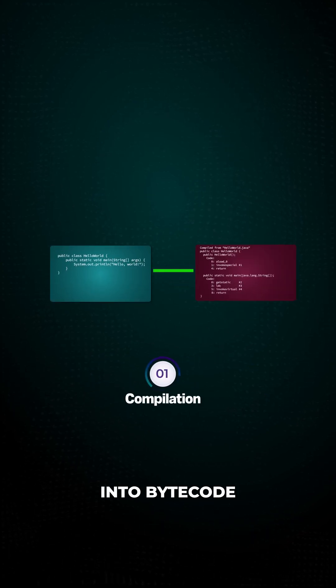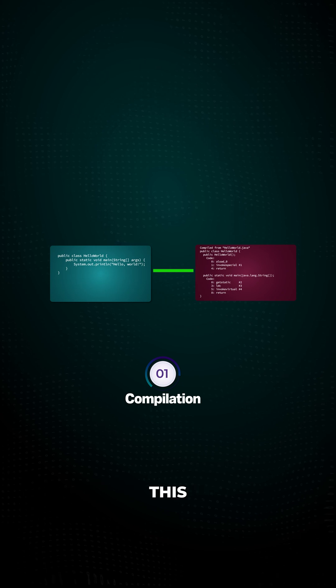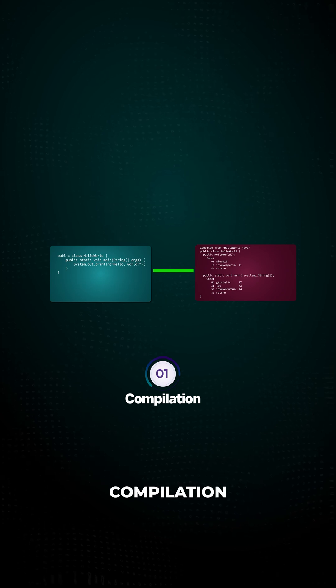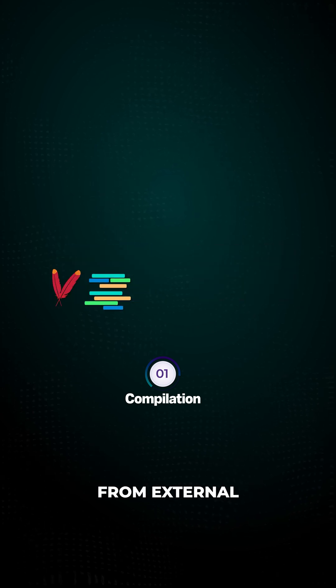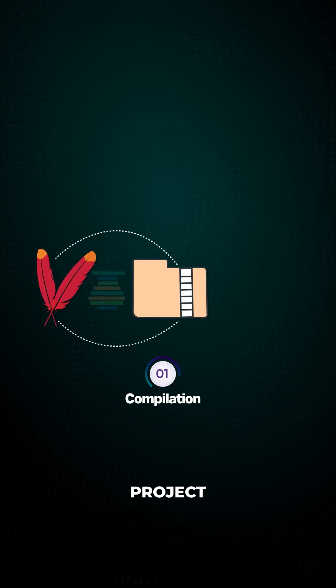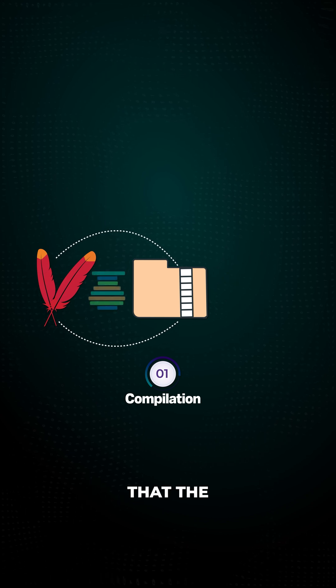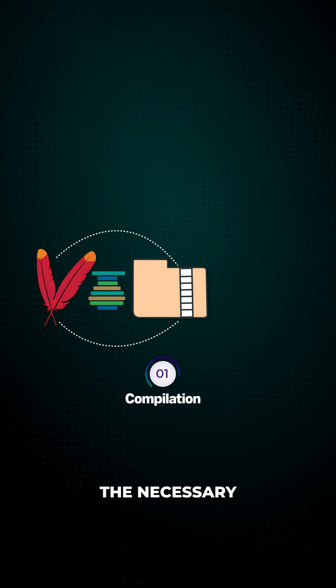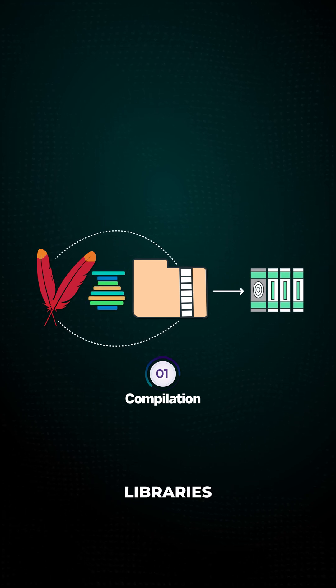First, the code must be compiled into bytecode. Before or during this compilation, dependencies from external repositories need to be resolved and included into the project to ensure that the application has the necessary libraries.